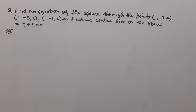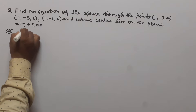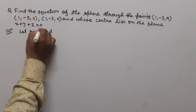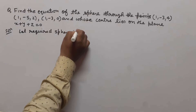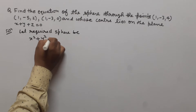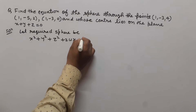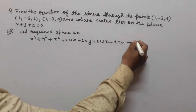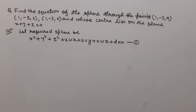Here we have to find the equation of the sphere. The required sphere passes through three points whose center lies on the plane x + y + z = 0. So first we suppose the general equation of the sphere. Let the required sphere be x² + y² + z² + 2ux + 2vy + 2wz + d = 0. Let us suppose that this is the required sphere, equation 1.